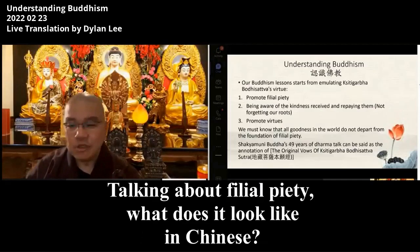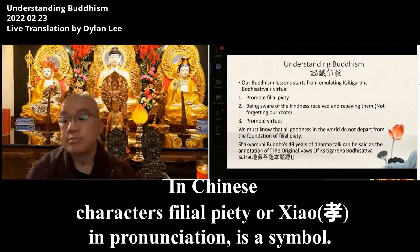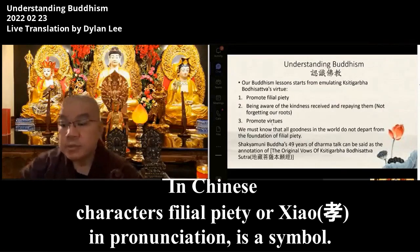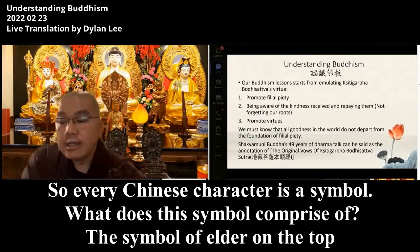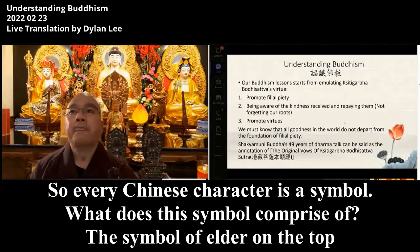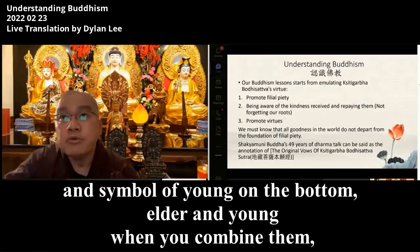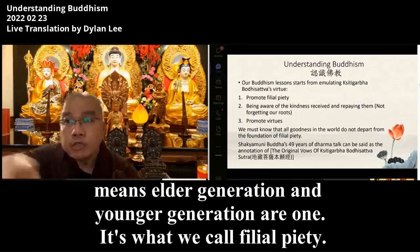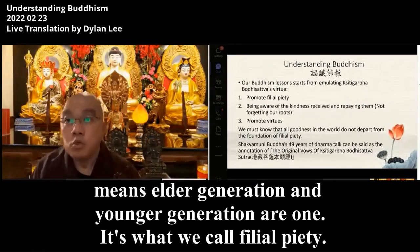When we talk about Filial Piety, how does it look in Chinese? In Chinese characters, Filial Piety — or Xiao in pronunciation — is a symbol. Every Chinese character is a symbol. This symbol comprises elder on the top and young at the bottom. When you combine elder and young, it means elder generation and younger generation. If they are one, it's what we call Filial Piety.